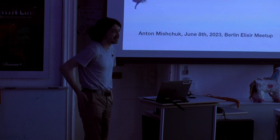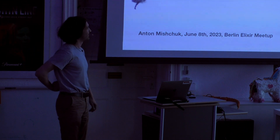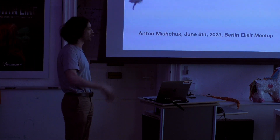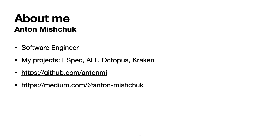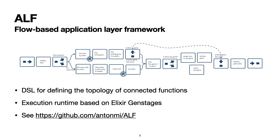Good evening, it's me again. My idea of flow-based programming — first time I presented to the Berlin community my Alf framework was about one year ago, and this is kind of again about the same but on a different level. Alf was for applications, just for one single application. Kraken is this idea on a higher level — on the system level. My name is Anton, I'm a software engineer with several Elixir projects; maybe someone heard about ESpec, Alf, Octopus.